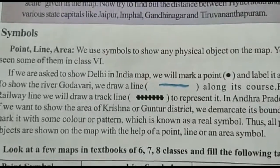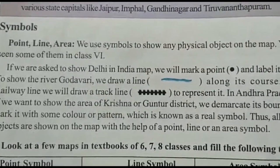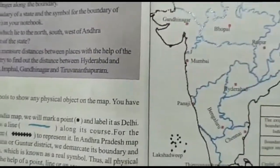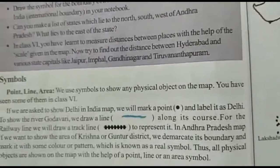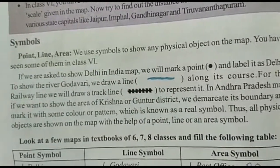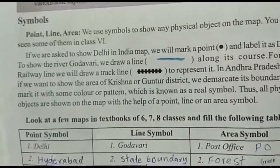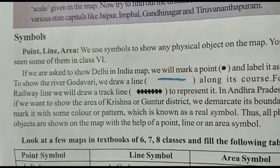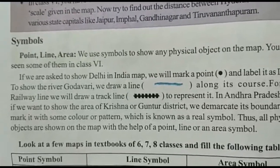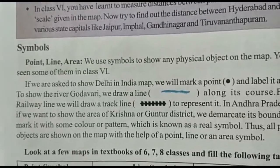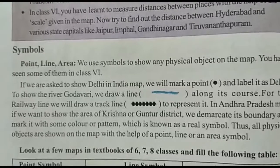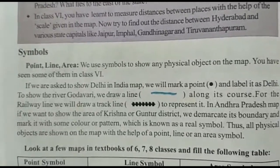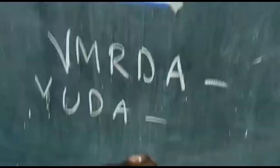So we have three symbols: first, the point symbol, used to show exactly where a place is; second, the line symbol, used for showing rivers; and third, the area symbol, used for showing a railway track line.